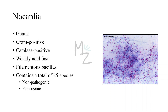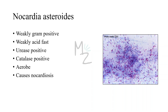Nocardia are filamentous bacilli — bacillus means rod-shaped bacteria — and they form filaments like beads on a thread. Nocardia contains a total of 85 species, some non-pathogenic and some pathogenic. Nocardia asteroides is weakly gram positive, weakly acid fast, urease positive, and catalase positive. It is an aerobe and is responsible for causing nocardiosis, which has three types we'll cover in the pathogenesis section.